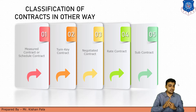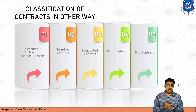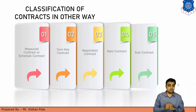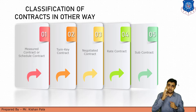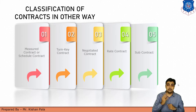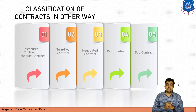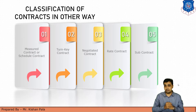The five classifications are: first, measured contract and scheduled contract; second, turnkey contract; third, negotiated contract; fourth, rate contract; and fifth, subcontract. Now let us discuss each one in detail.